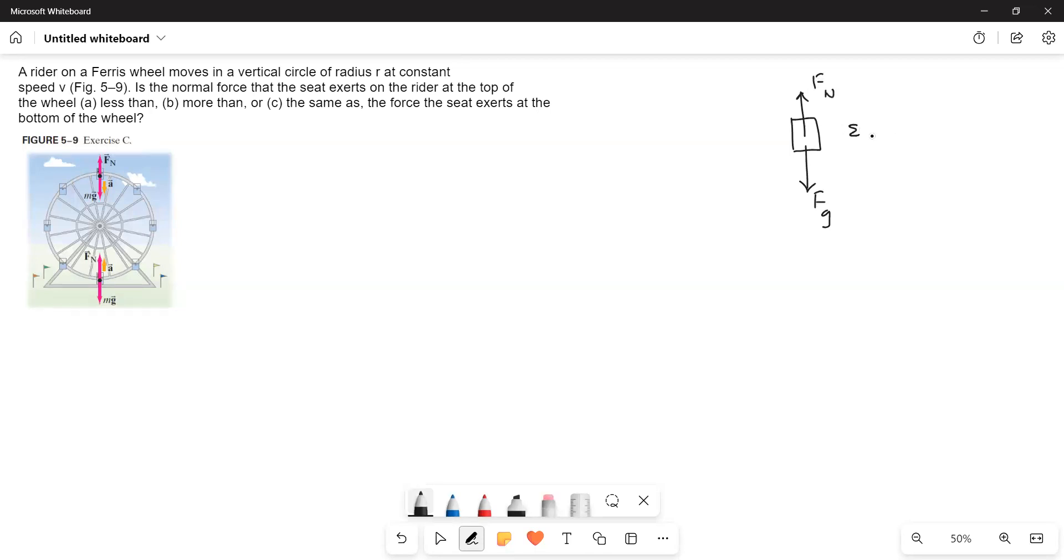Therefore, sigma Fy is equal to Fn minus Fg is equal to 0 because the object is at rest. Therefore, Fn is equal to Fg. If Fg is nothing but Mg, therefore Fn is equal to Mg, which is nothing but your weight.